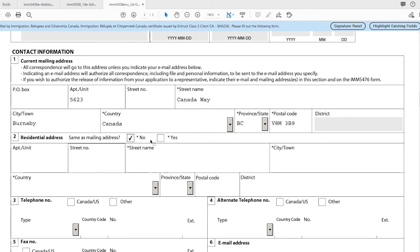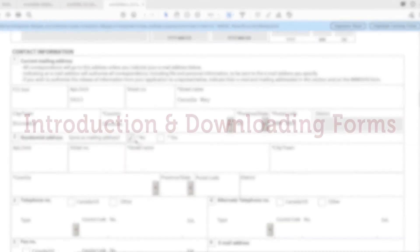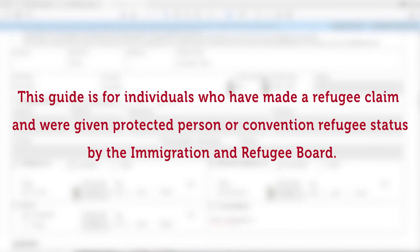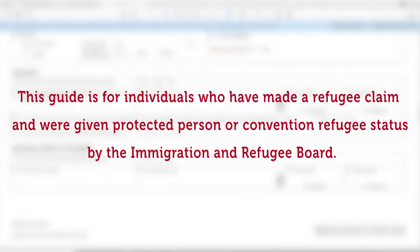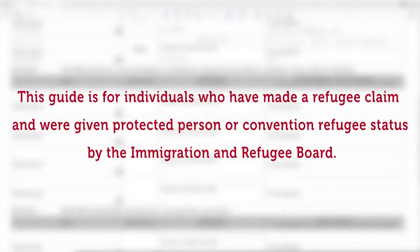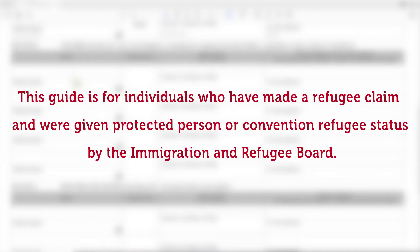Welcome to the ISS of BC video tutorial series for filling out your permanent residence application forms. Please note that this guide is for protected persons and convention refugees. If you are not a protected person or a convention refugee, there are a few steps that might not apply to you. Please consult your settlement worker to identify the differences. If you have any PR application questions that aren't answered in this guide, please contact your settlement worker.